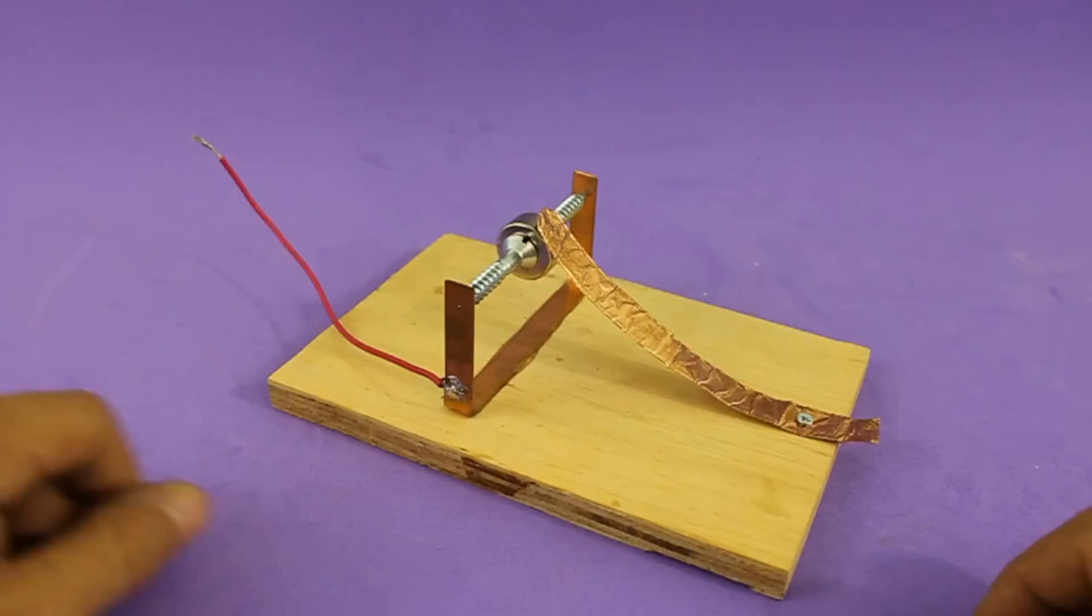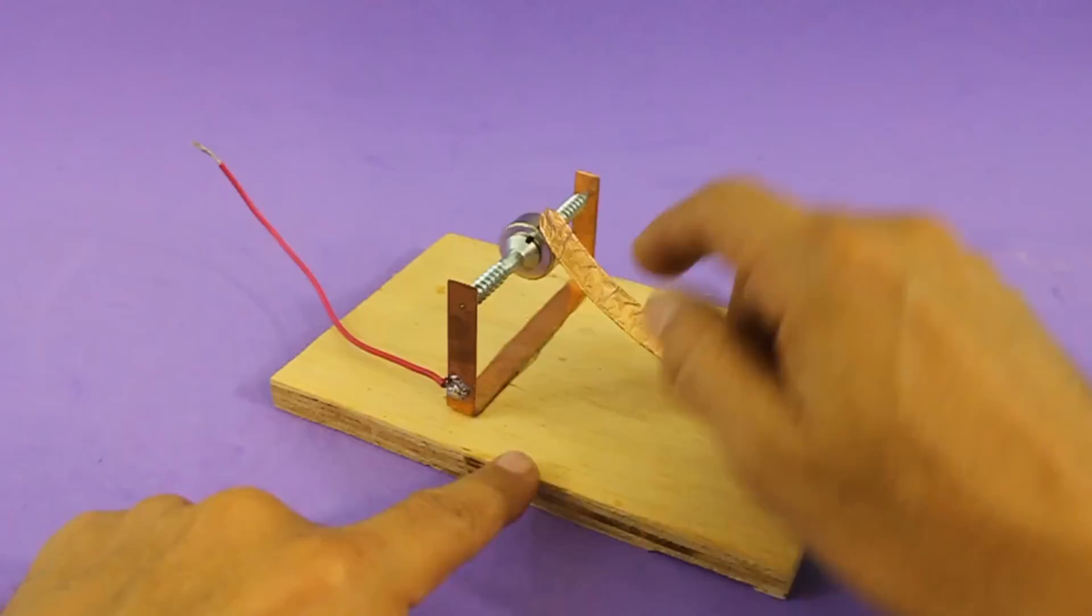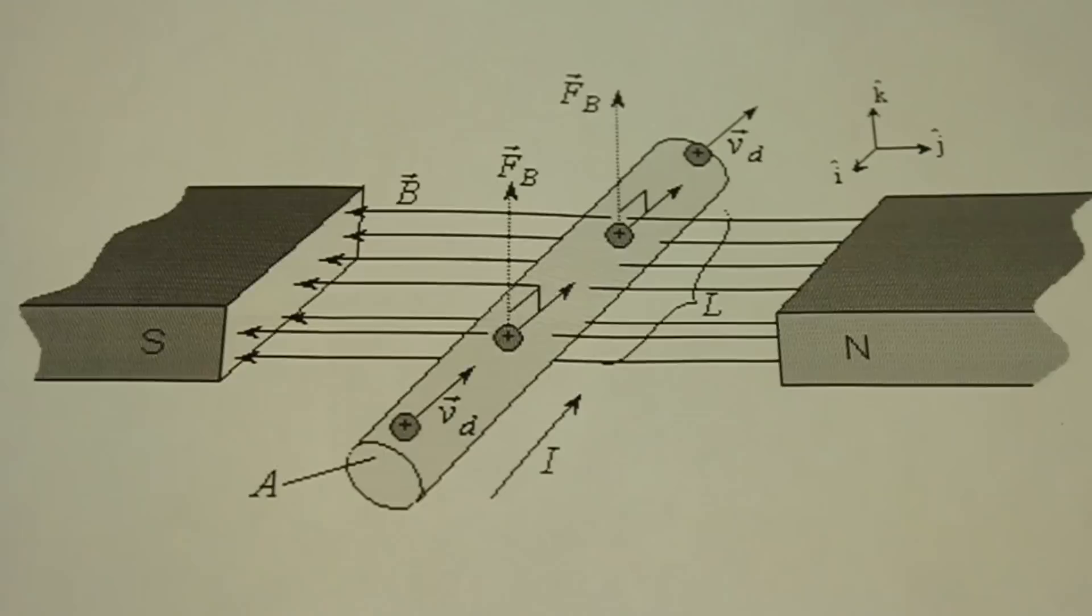We will connect a battery here and here so the electricity flows from the copper tape to the magnet then through the screws to the copper strip and then back to the battery. The motor works because of the Lorentz force.